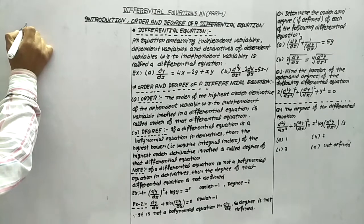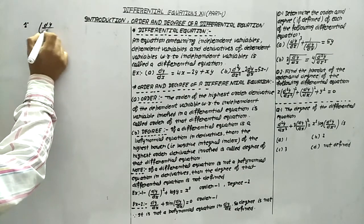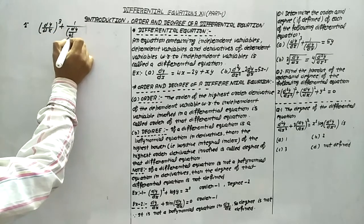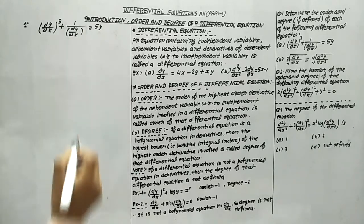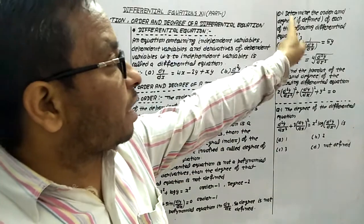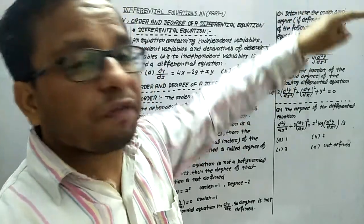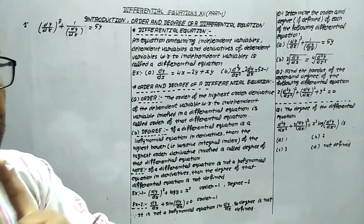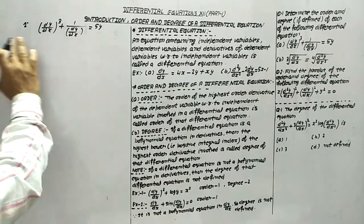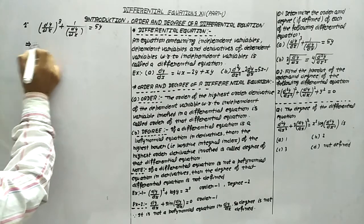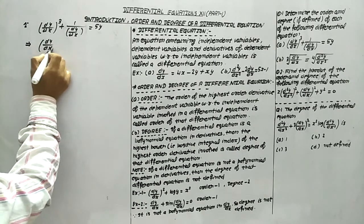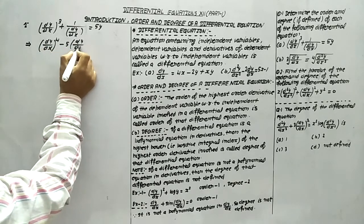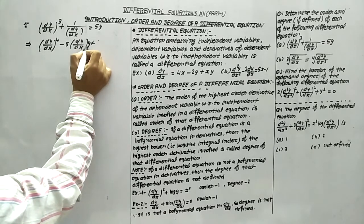Let's do some important questions. In question 1a, we have (dy/dx)³ + 1/(dy/dx) = 5y. To find the order and degree — note that whenever degree is asked, it is mentioned 'if defined' in brackets, because if it is a polynomial equation in dy/dx the degree is defined, otherwise not. To solve this, take the LCM to simplify, which gives (dy/dx)⁴ − 5(dy/dx) + 1 = 0.